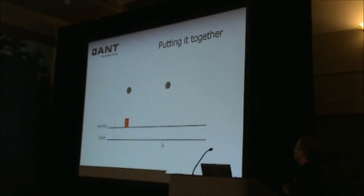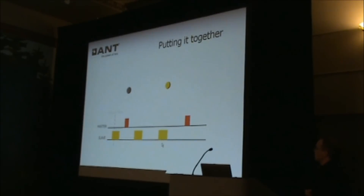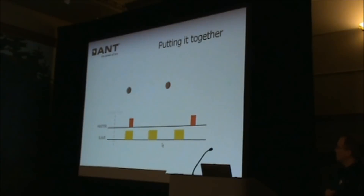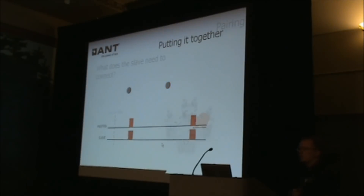This quick animation puts some of this together. On top, we have a master transmitting at a specific channel period. A slave comes along and goes into search mode, duty cycling its radio on and off, trying to find a packet. As soon as it finds that first one, it adjusts itself and only receives at the channel period.